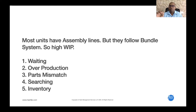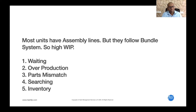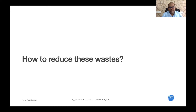Most units follow a bundle system inside their assembly lines — bundles of 10, 20, or 30 pieces — which means a lot of WIP gets created. I can identify these wastes: waiting waste, overproduction, and parts mismatch. When there are a lot of components, people may stitch wrong parts — for example, a size 40 shirt may get a size 38 cuff or a different sleeve. Searching for components is also a big issue, and overall there is a lot of inventory.